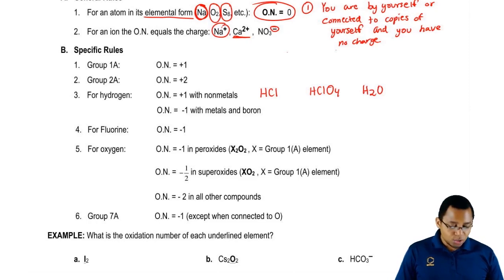But if hydrogen is connected to a metal or boron, it's minus one. So if we had NaH or BH3, then in those cases hydrogen would be negative one.